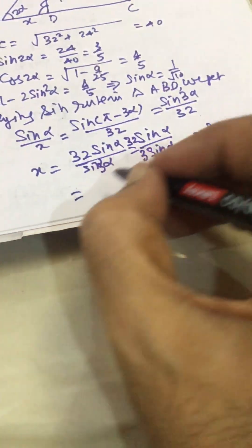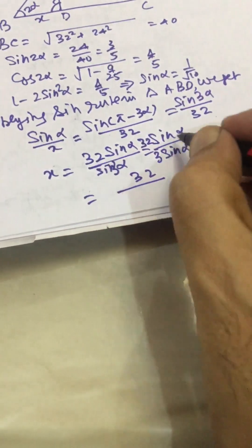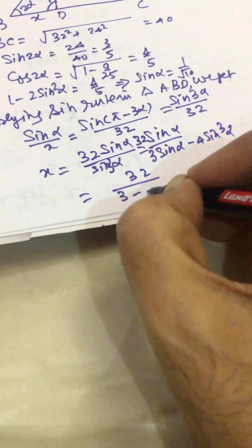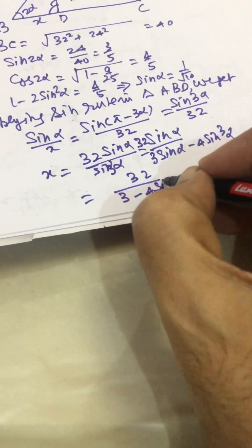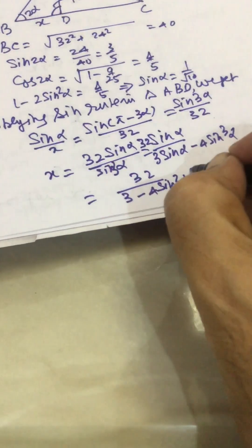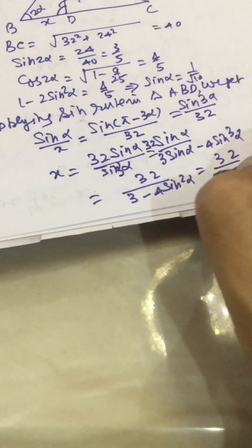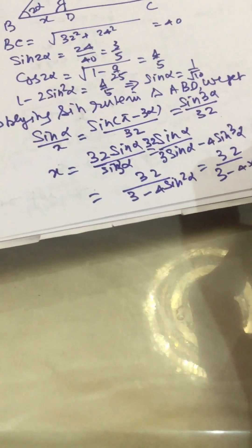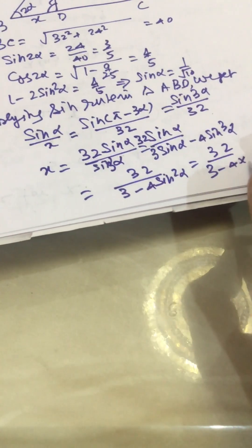Dividing by sin α we get 3 minus 4 sin²α. So this becomes 32 divided by 3 minus 4 times sin²α. Sin²α will be 1/10.